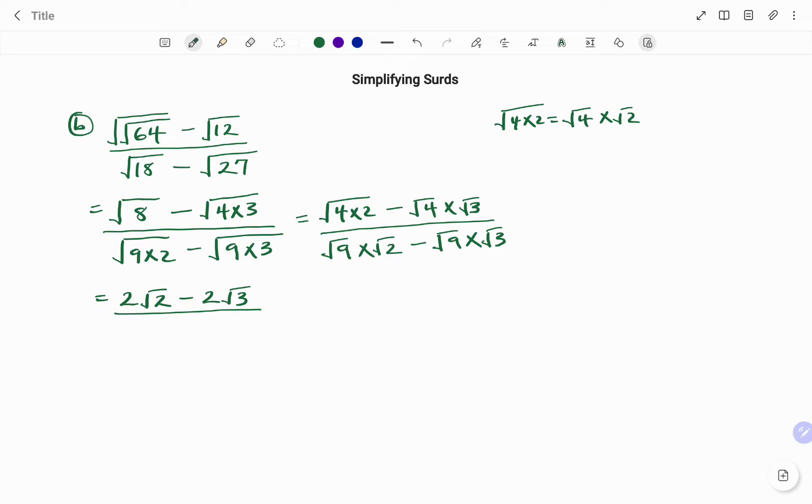I have square root of 9, that's 3 root of 2 minus 3 root of 3. So therefore,